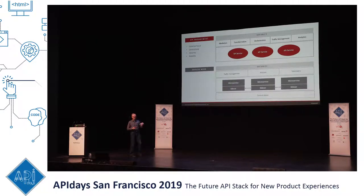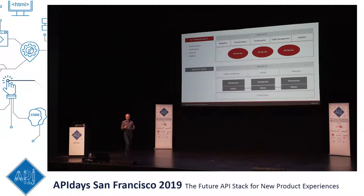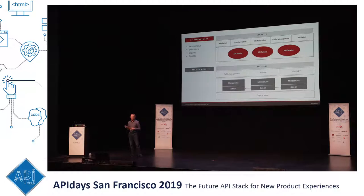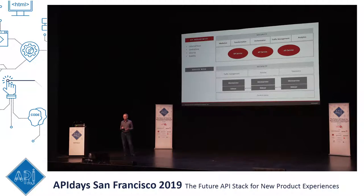API management is external focused — it's the first line of defense from the outside world to you. It tends to be centralized, usually one or maybe a federated small number, because you've got to have them audited by third parties, poke holes in the firewall, deal with logging, policy enforcement, and all the administrative details. So typically that's not very many installations. Security is key and stability is key, because if this goes down, all your APIs are down. It's got to be rock solid, reliable, and scalable.